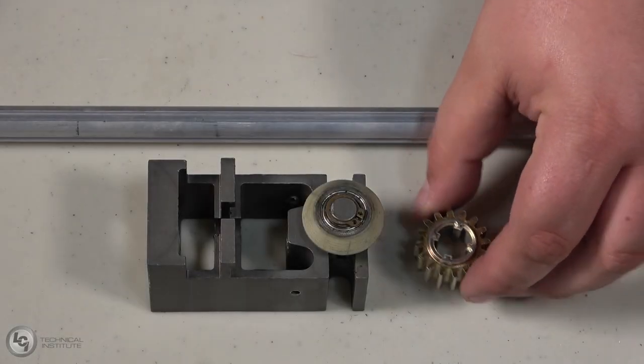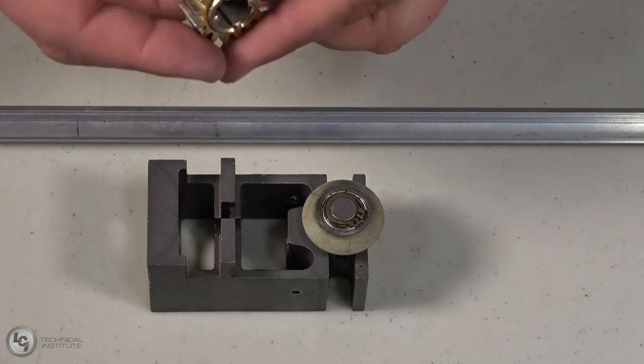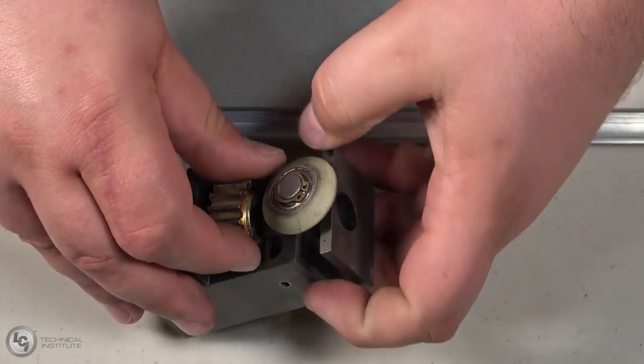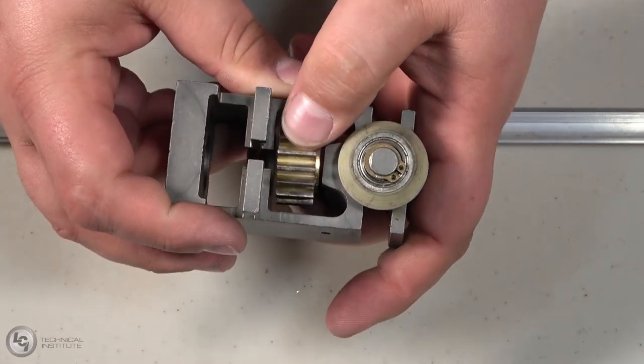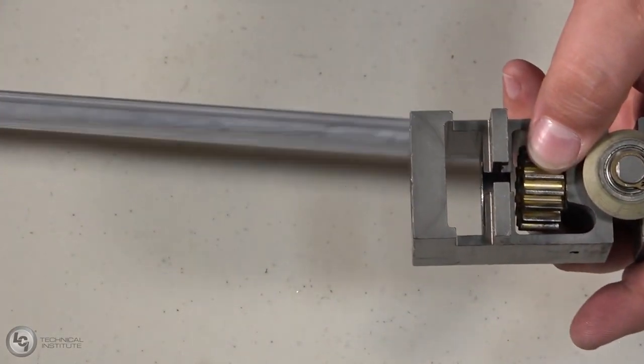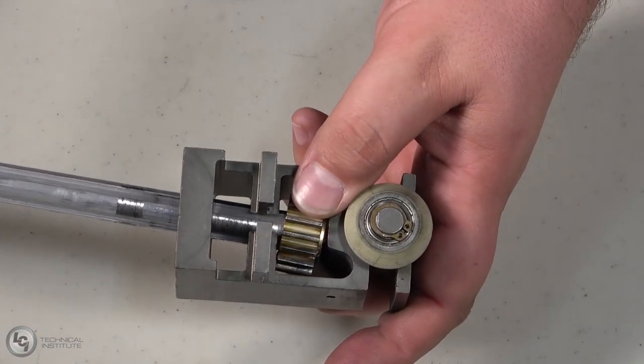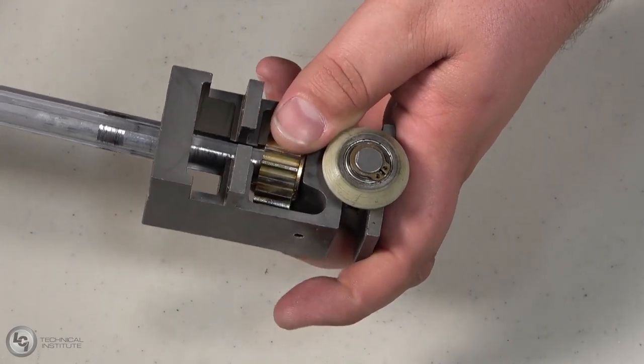To reassemble our system, we will first start with placing our spur gear into our drive block, with the lip of the spur gear facing down or towards the V-Roller. We will then pick up our upper bearing block and spur gear in one hand and feed our torque shaft through.